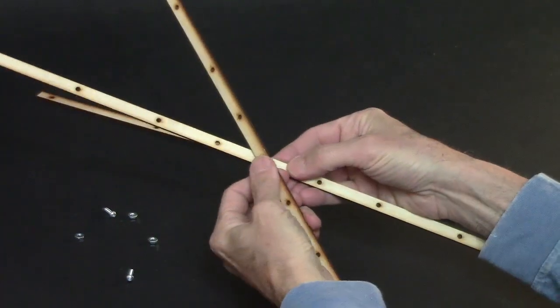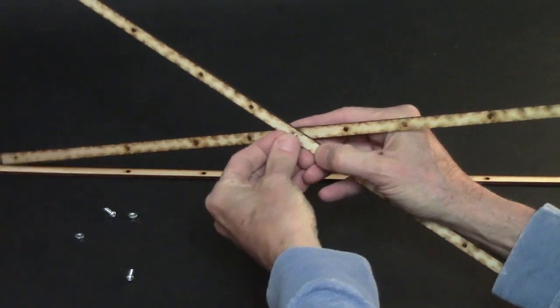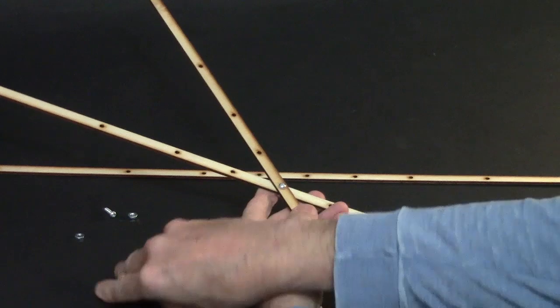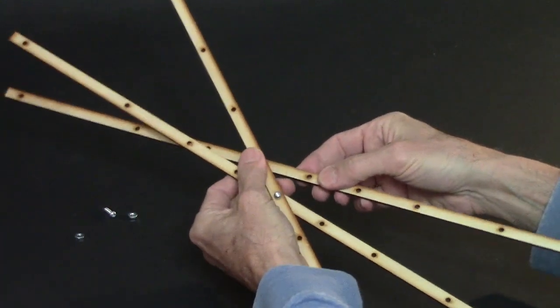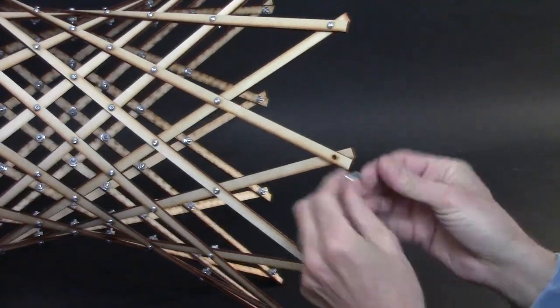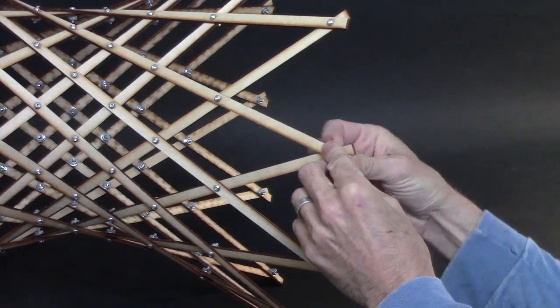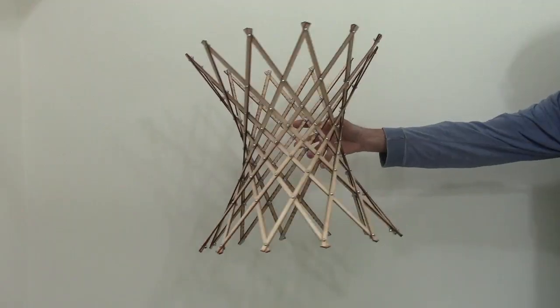Then use some small nuts and bolts to connect the strips together. The slats will twist along their length as you progress. Here you go! I have to say, that's a beautiful hyperboloid.